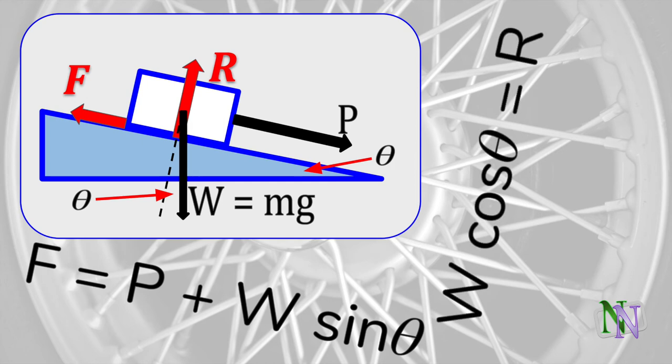Perpendicular to the slope we have the reaction and the other component of the weight which are equal to each other.